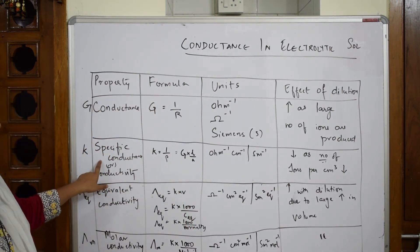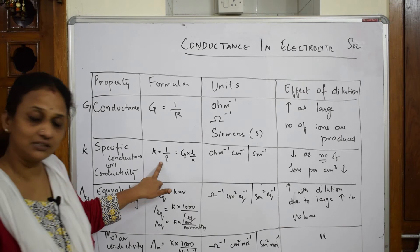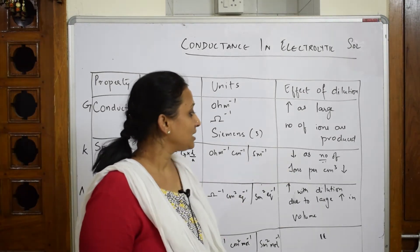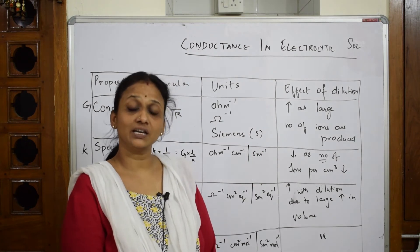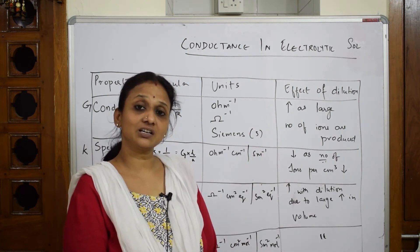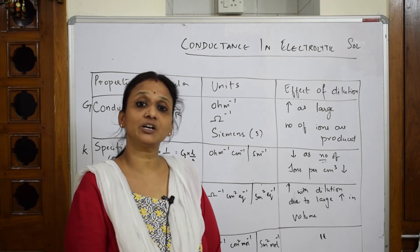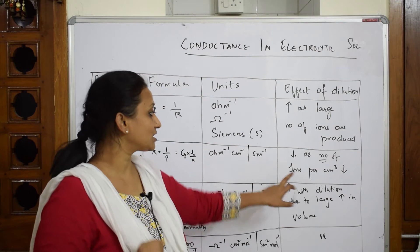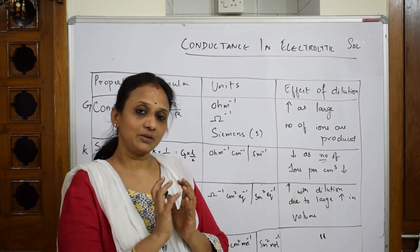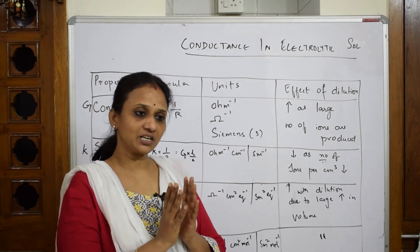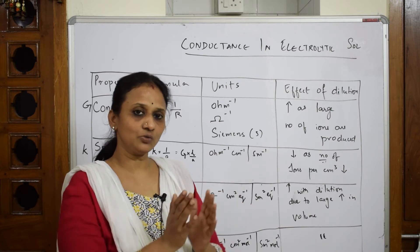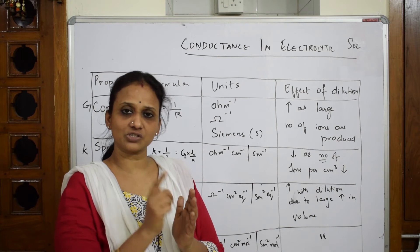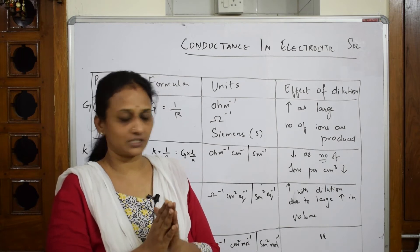The next concept is specific conductance, or conductivity. You've already learned the formula and units. With dilution, specific conductance decreases. Specific conductance relates to a fixed electrode distance of one centimeter and an area of cross-section of one centimeter square.